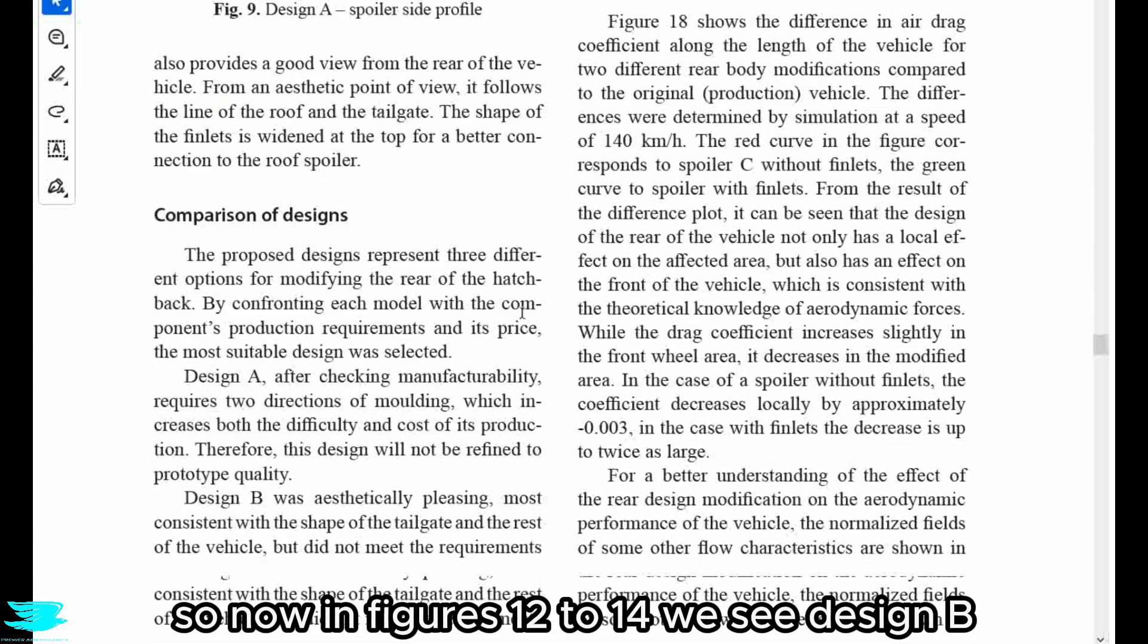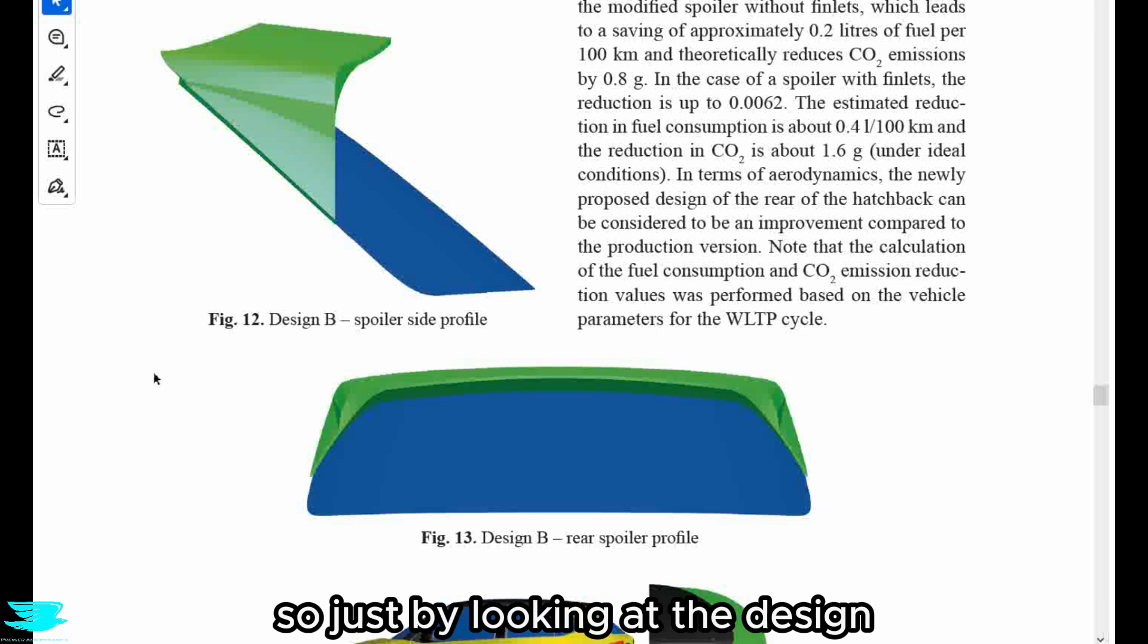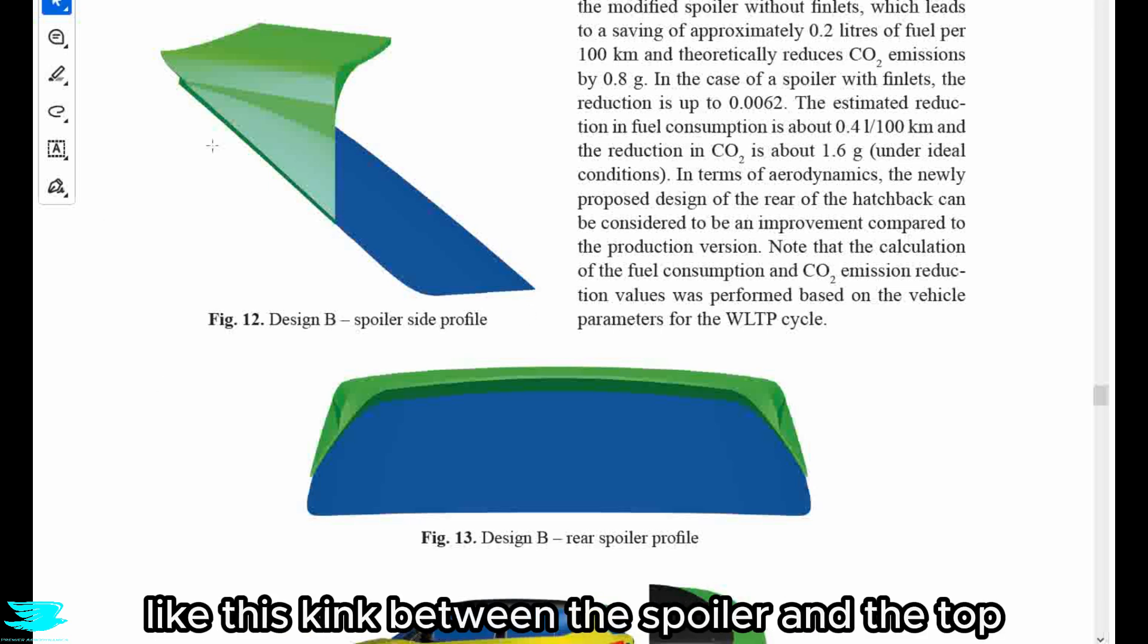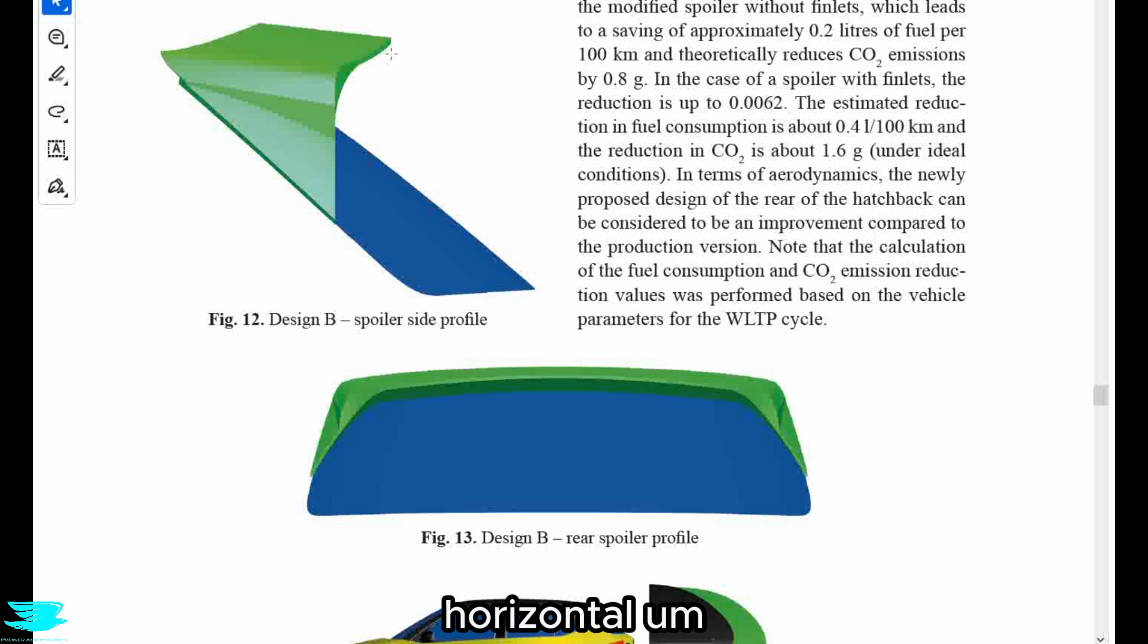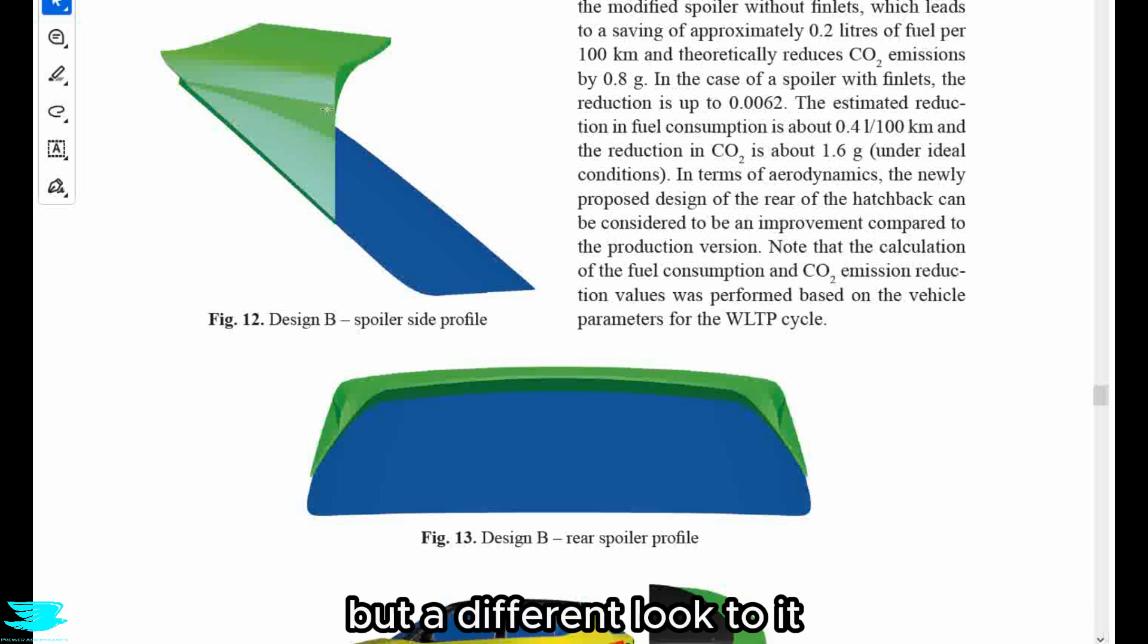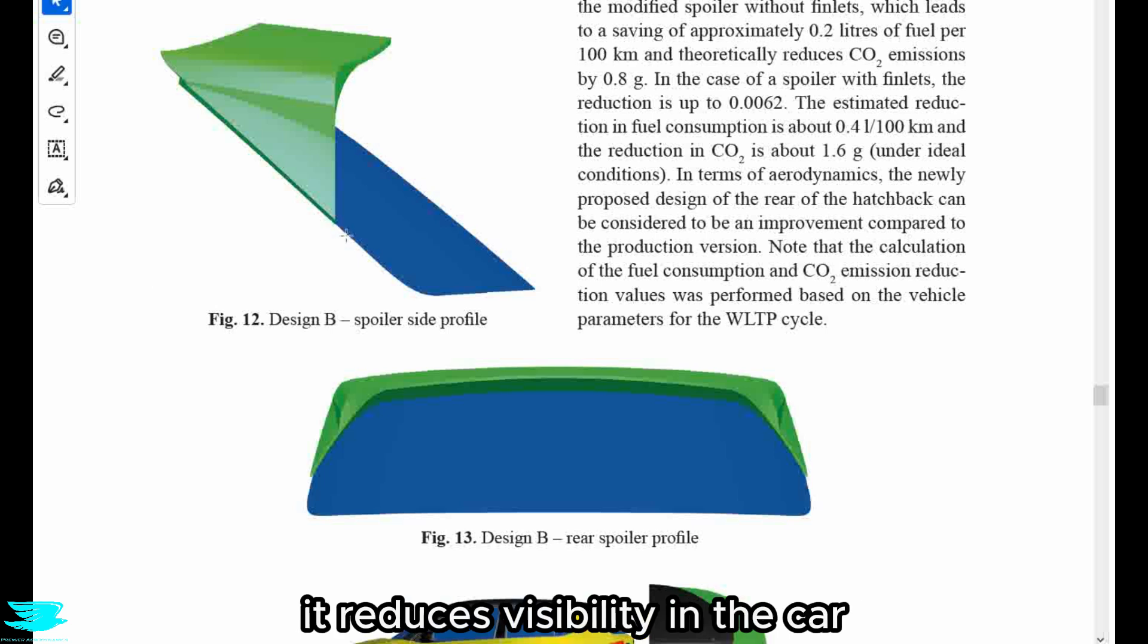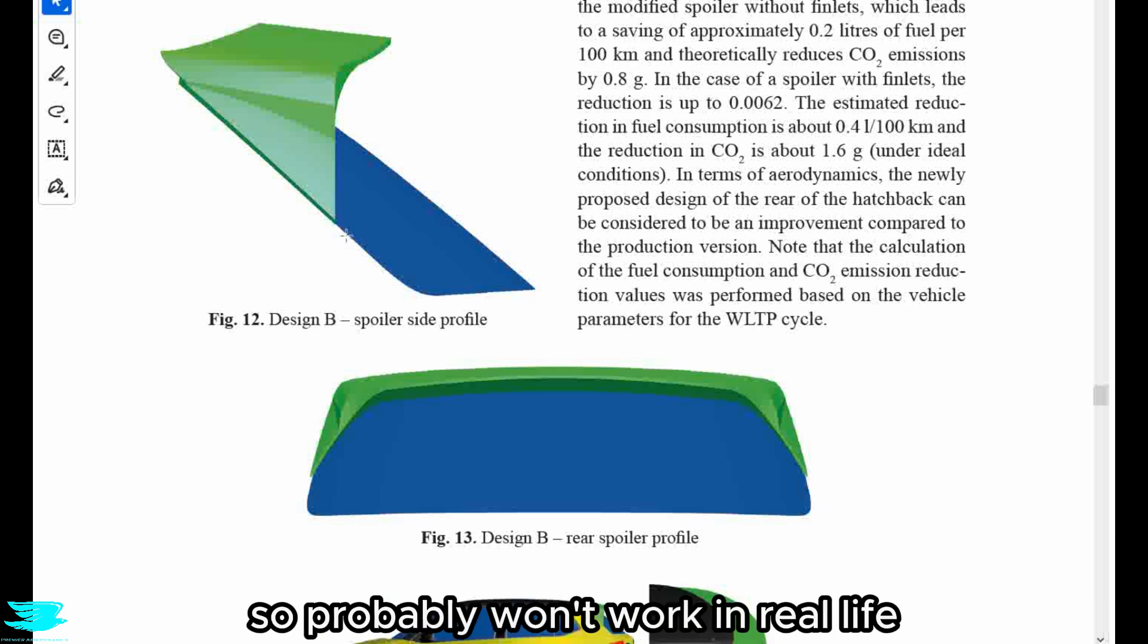So now in figures 12 to 14, we see design B. So just by looking at the design, we can see that there is like this kink between the spoiler and the top horizontal thing that the fins. Overall, it features the exact same tech as design A, but a different look to it. The researchers say that this design reduces visibility in the car. So it probably won't work in real life.